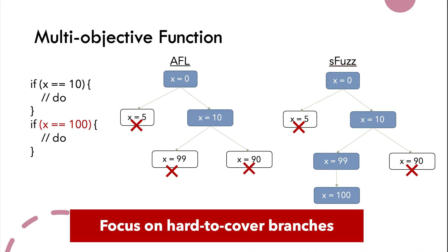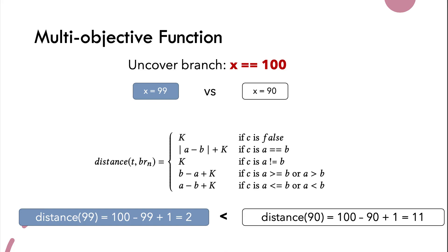Here we show the differences between the objective functions of AFL and SBST. Both AFL and SBST aim to cover all branches of the program. The test case x = 0 covers 3 out of 4 branches; the remaining branch requires x = 100. AFL discards x = 99 even though it is very close to 100. SBST keeps x = 99 and finally reaches 100, covering all branches. To know why 99 is worth mutating over 90: we calculate the distance between a test case and an uncovered branch using the formula given in the slide — smaller is better. The distance of 99 is 2, which is smaller than the distance of 90, which is why we choose 99.